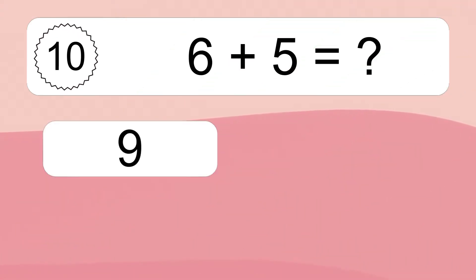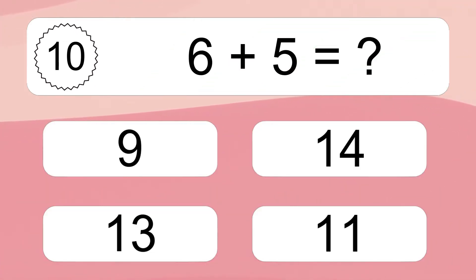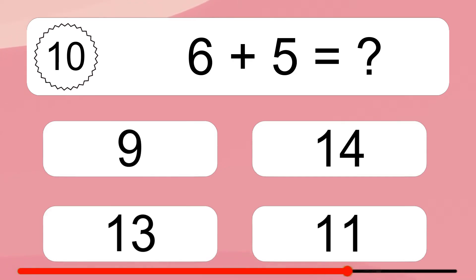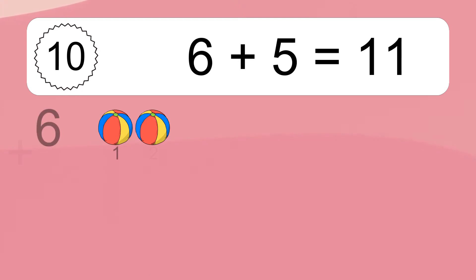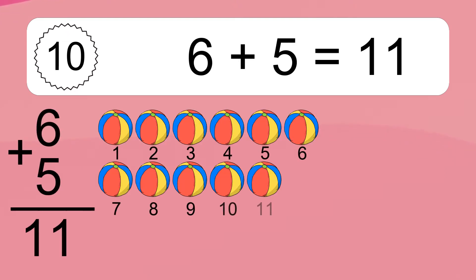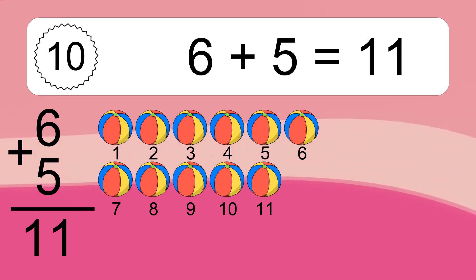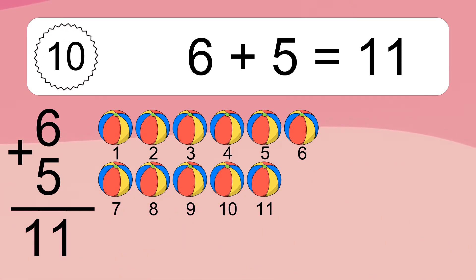6 plus 5 equals what? 6 plus 5 equals 11. Let's count it: 1, 2, 3, 4, 5, 6, 7, 8, 9, 10, 11.